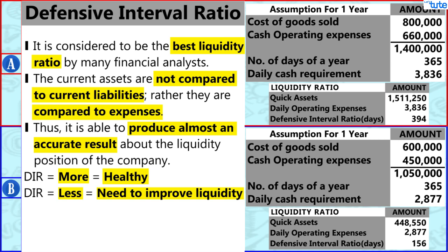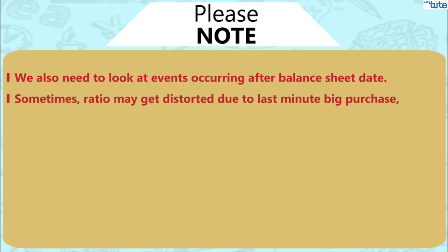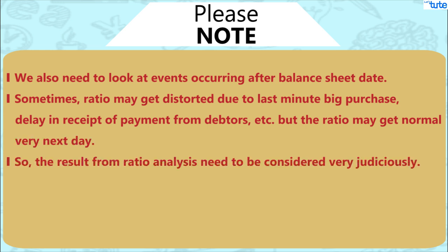We hope that you understood this ratio very well. Please note that we also need to look at events occurring after the balance sheet date. Sometimes a ratio may get distorted due to last-minute big purchases or delays in receipt of payment from debtors, but the ratio may get normal the very next day. So the results from ratio analysis need to be considered very judiciously.